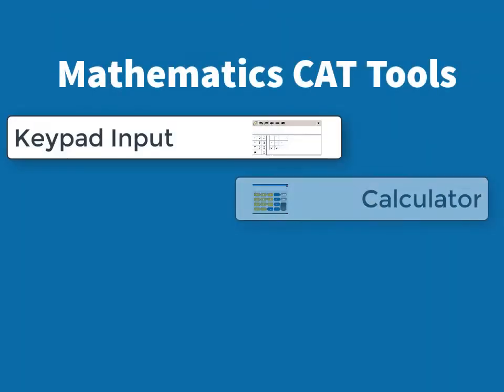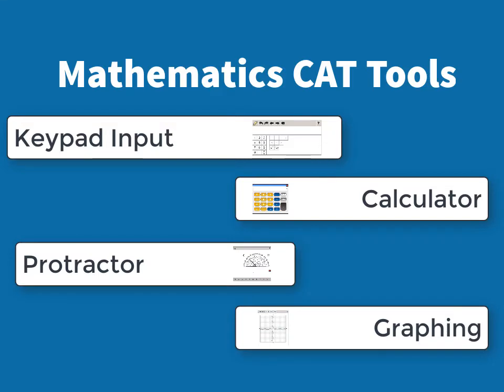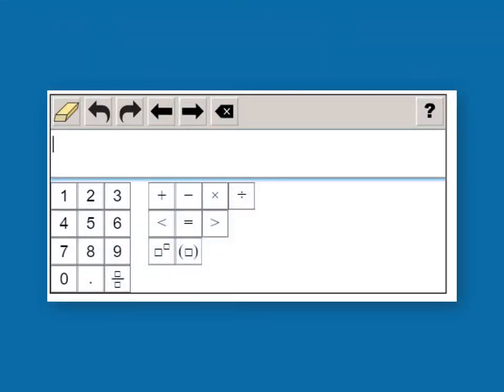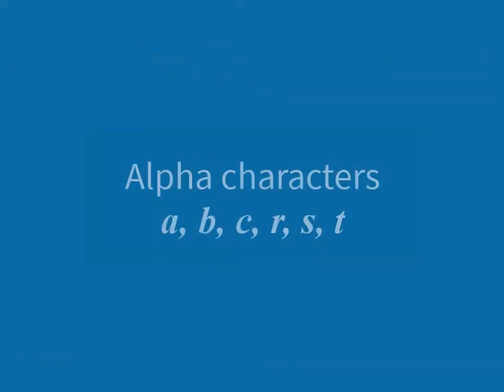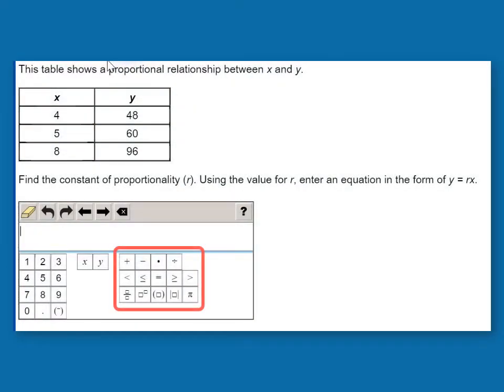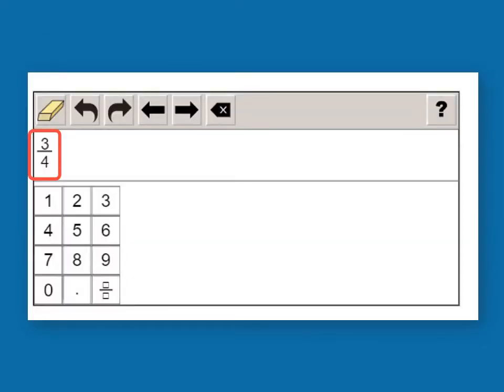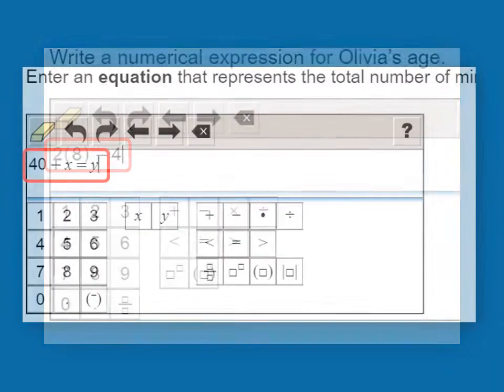The mathematics CAT has several tools embedded in the test items. The keypad input allows students to enter numbers by clicking on the online keypad or from their physical keyboards. Alpha characters that appear on the keypad input may also be entered from keyboards. The keys available will vary depending on the item. Any necessary variables will be included. The keypad input allows for the entry of numbers, fractions, expressions, and equations.